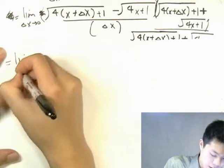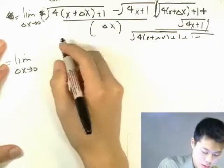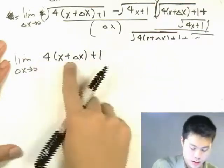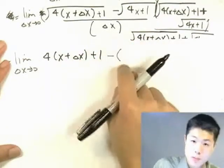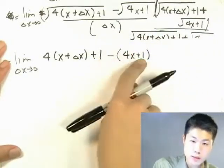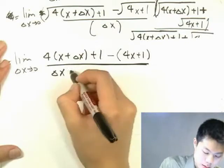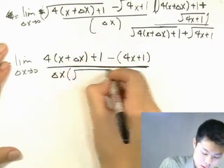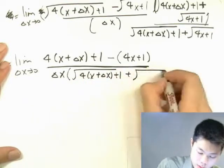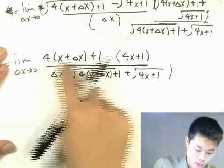So once we do that, then we can simply write a squared minus b squared, so the radicals lift in the numerator. That's going to equal the limit as delta x goes to zero of four times x plus delta x plus one minus, don't forget your parentheses here, minus 4x plus 1, delta x times the same thing on the bottom. We're not going to distribute this thing, and you'll see why.